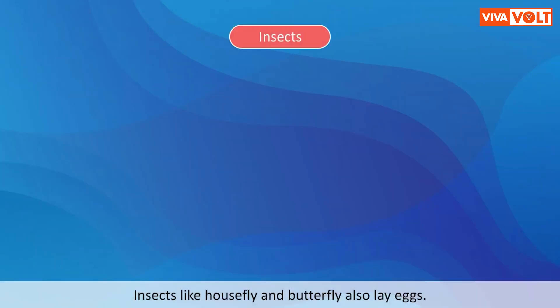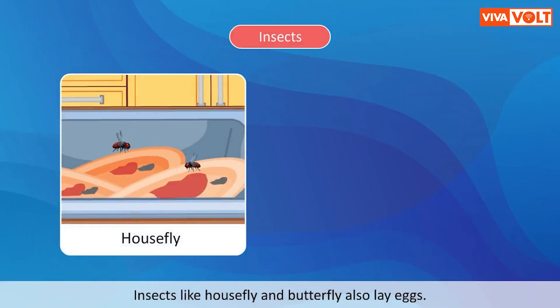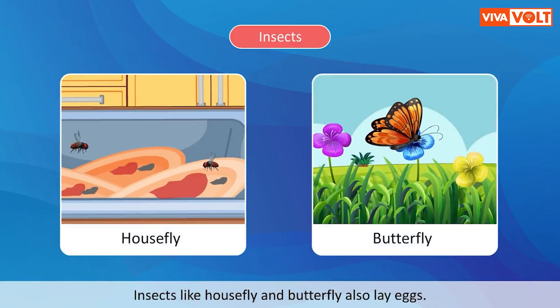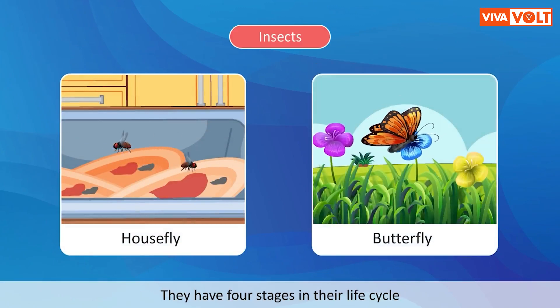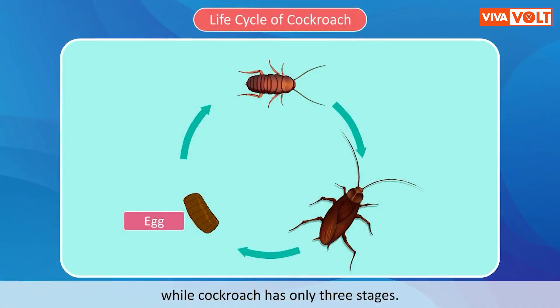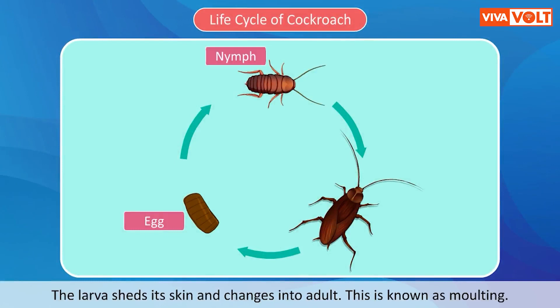Insects like house fly and butterfly also lay eggs. They have four stages in their life cycle, while the cockroach has only three stages. The larva of a cockroach is known as a nymph. The larva sheds its skin and changes into an adult, which is known as moulting.